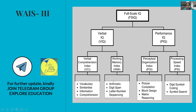Looking at the WAIS-III structure diagram: Full Scale IQ is divided into Verbal IQ and Performance IQ. Verbal IQ encompasses the Verbal Comprehension Index (VCI) and Working Memory Index (WMI). Performance IQ encompasses the Perceptual Organization Index (POI) and Processing Speed Index (PSI). Verbal IQ has 7 subtests and Performance IQ has 5 subtests.